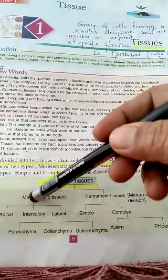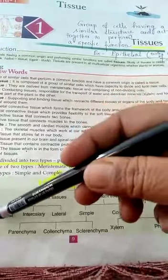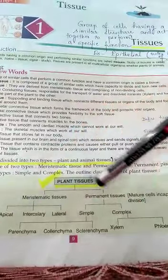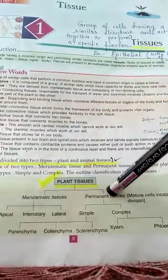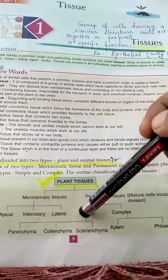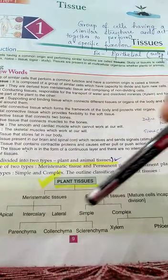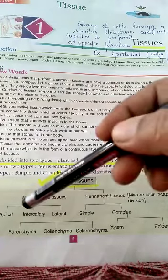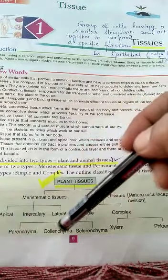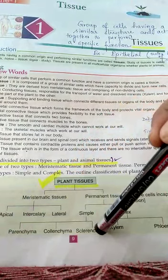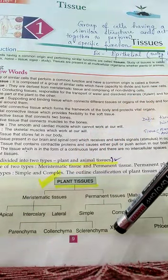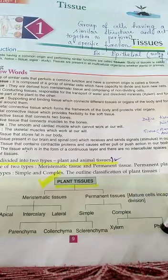Meristematic consists of apical, intercalary, and lateral. Permanent tissues are again of two types: one is simple, another one is complex. Simple is again of three types: parenchyma, colenchyma, and sclerenchyma. Complex is again of two types: one is xylem, another one is phloem.